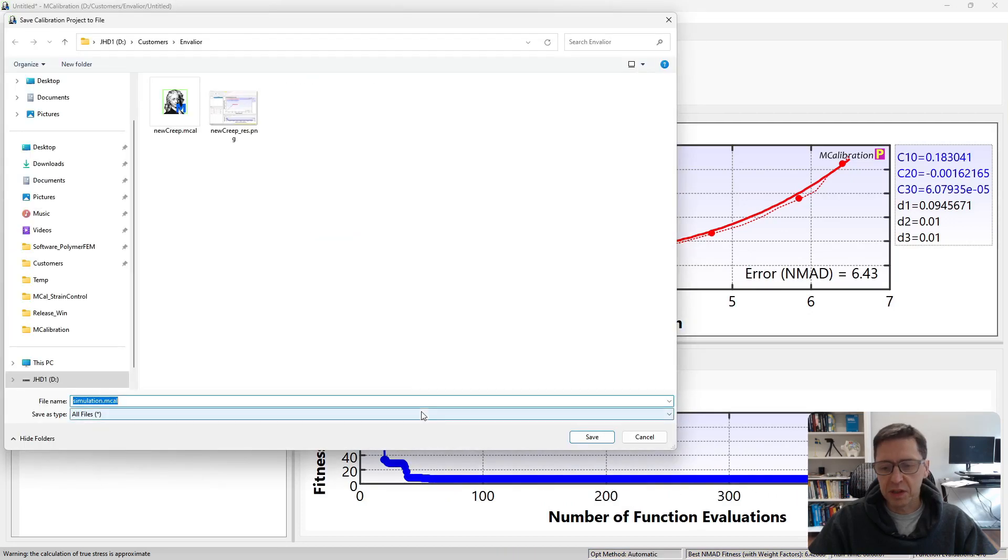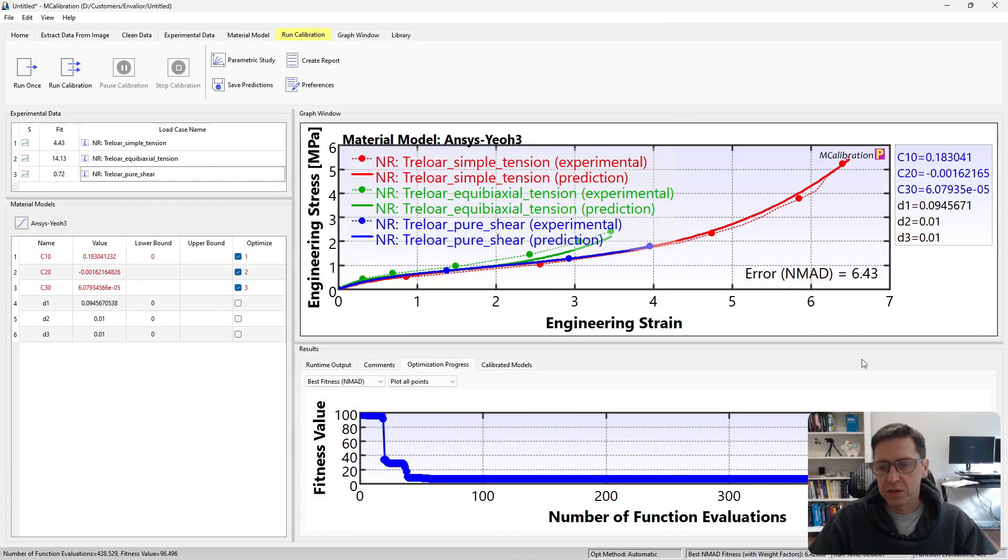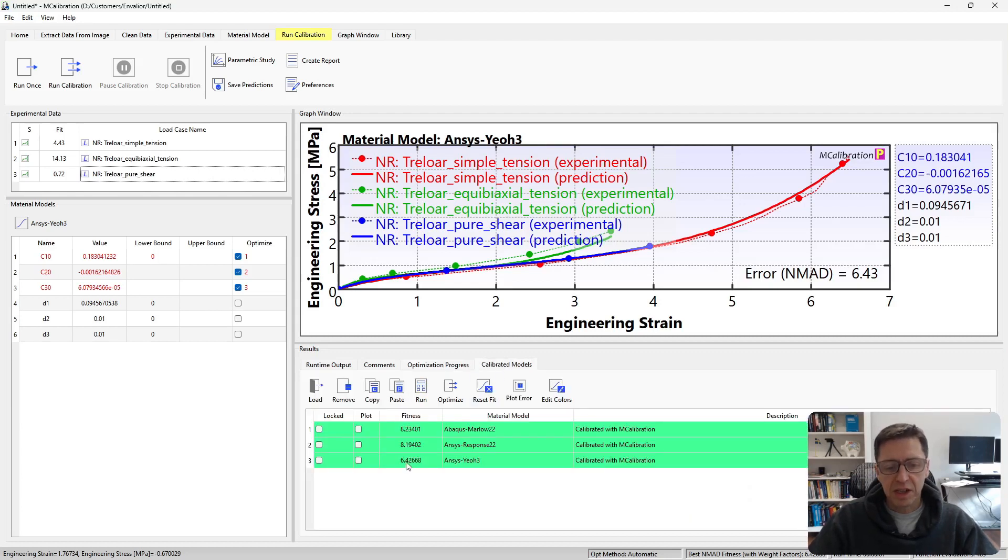I'm going to stop it here. You don't need to save it. So here we have an error of 6%. We see that the Yeoh hyperelastic model is also an i1 based hyperelastic model. It has an error of 6%, the Abacus and Ansys type of response models have 8. So in some sense, the Yeoh model is more accurate than those. And they were not harder to use, the Yeoh model versus the other two response and Marlow models.